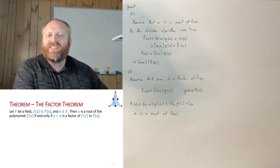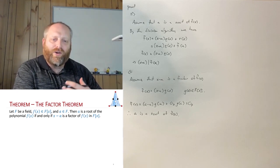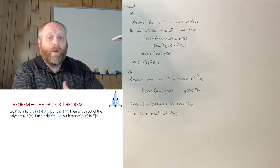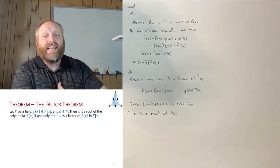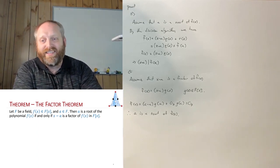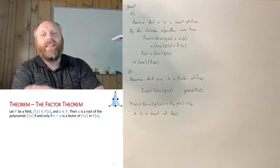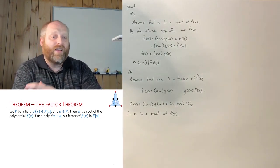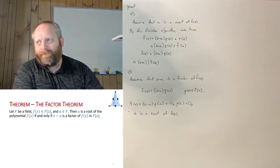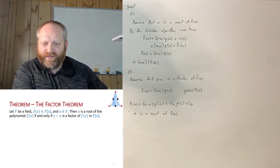This gives us an idea of how we can answer the question of whether a polynomial is irreducible or reducible. If a polynomial has a root a, then x minus a must be one of the factors, so we can break it down.